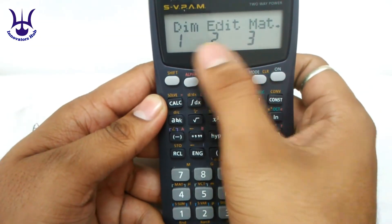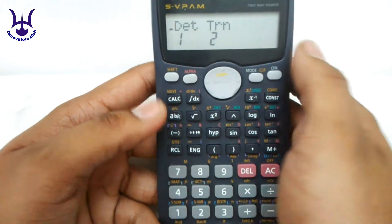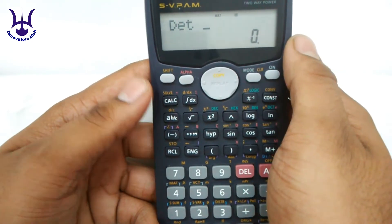Now press shift and 4 again. Again we'll get the values of dimension, added, matrix, determinant and transpose. We have to select determinant.